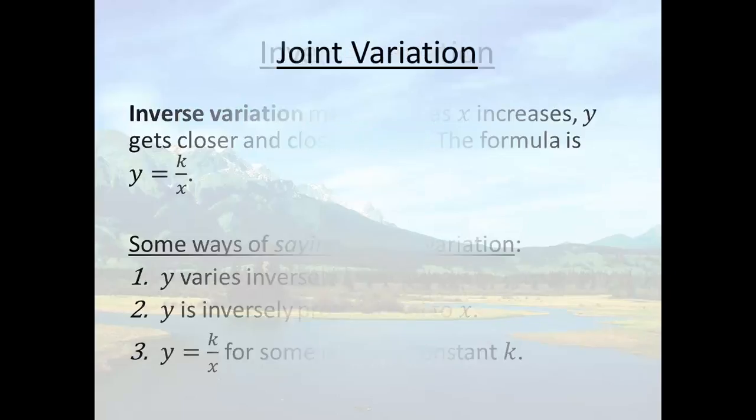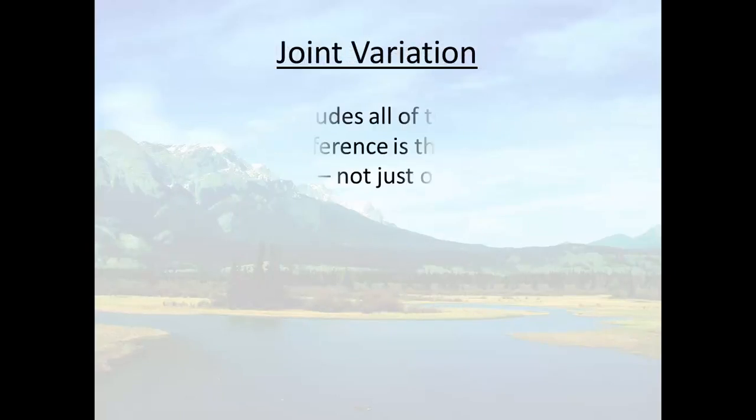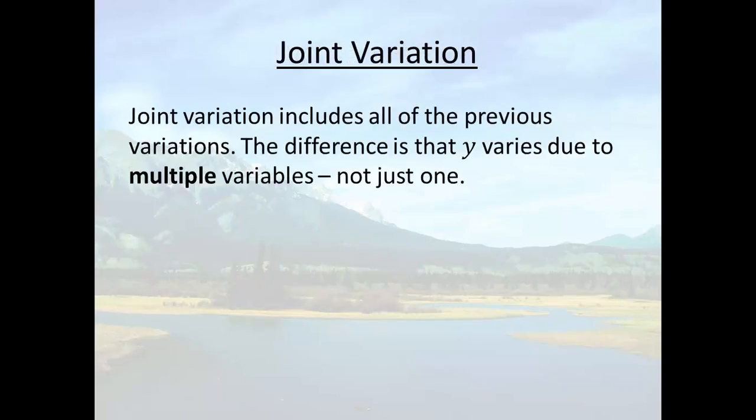The last type of variation is called joint variation. And really, joint variation will include any of those variations we talked about earlier. Direct, inverse, direct as a power of n. The difference is that in joint variation, y varies due to multiple variables instead of just one. So instead of having y equals kx, you may have y equals kxz. In other words, it's dependent on x and z.